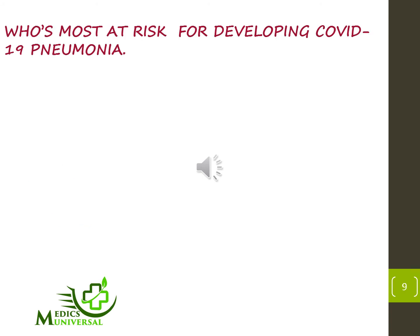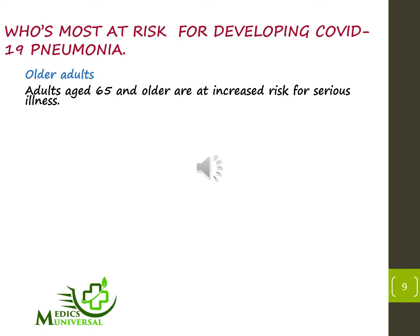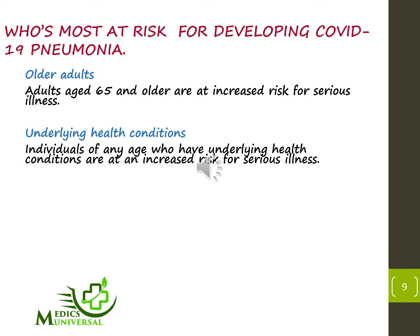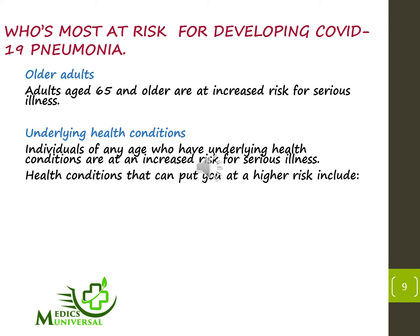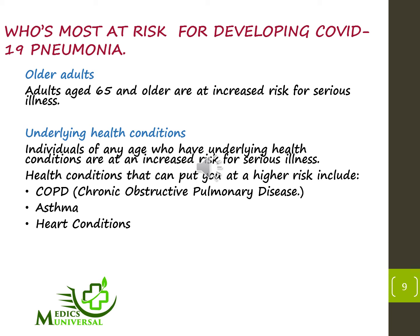Who is most at risk for developing COVID-19 pneumonia? Number one, older adults — adults aged 65 and older are at an increased risk for serious illness. Number two, underlying health conditions — individuals who have underlying health conditions are at an increased risk for serious illness. Health conditions that can put you at higher risk include COPD (chronic obstructive pulmonary disease), asthma, heart conditions, diabetes, and liver disease.